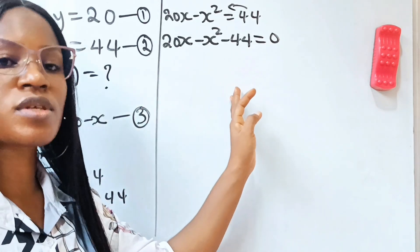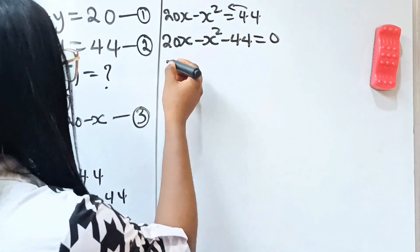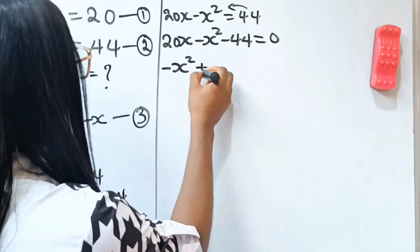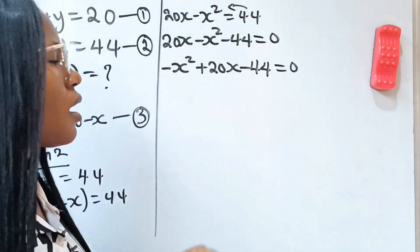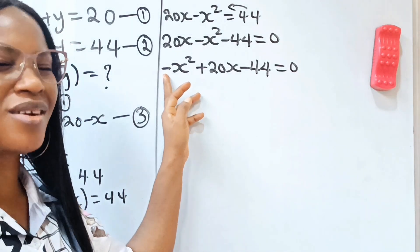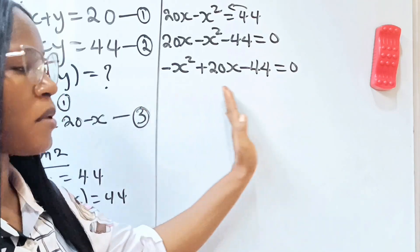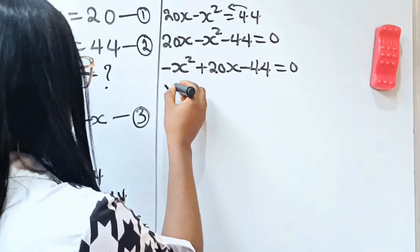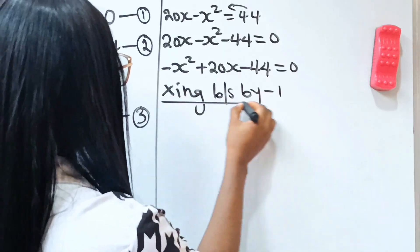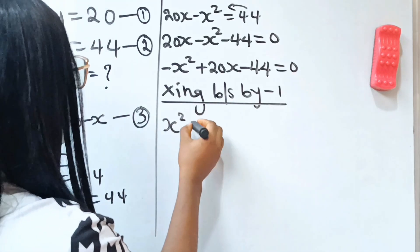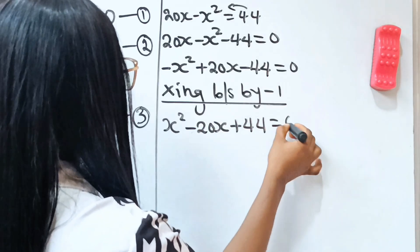If you look at this, you'll notice that we just formed a quadratic equation. So let's rearrange it. We have minus x squared plus 20x minus 44 equals 0. We have a negative sign here which looks awkward, so let's remove it by multiplying through by minus 1. We get x squared minus 20x plus 44 equals 0.